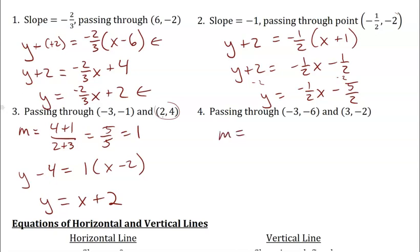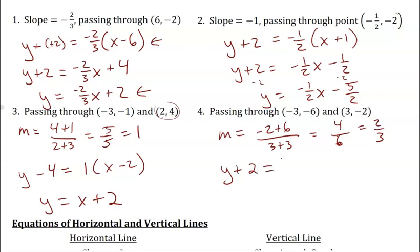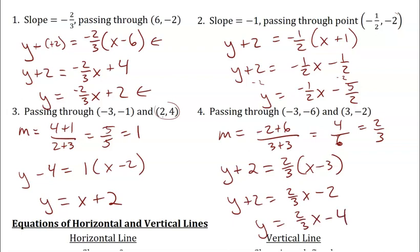One more: compute the slope first — negative 2 plus 6 over 3 plus 3 gives 4 over 6, reduced to 2/3. Point-slope form using the point (3, -2): y plus 2 equals 2/3 times (x minus 3). Distribute and subtract 2 for slope-intercept: y plus 2 equals 2/3 x minus 2, so y equals 2/3 x minus 4.